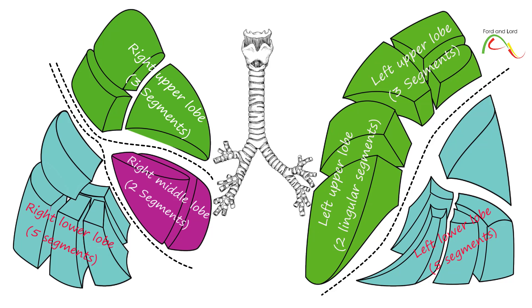Each bronchopulmonary segment also has its own lymphatic and autonomic nerve supply. Despite the left lung being smaller than the right lung and having only two lobes as opposed to three lobes in the right lung, there are some similarities in the segmental anatomy of the right and left lungs. There are, however, a few significant differences which you need to know.